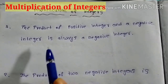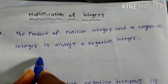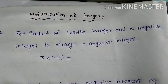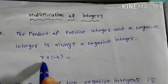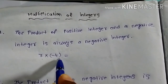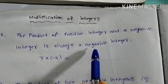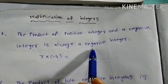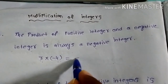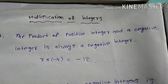What they have mentioned here: the product of a positive integer and a negative integer is always a negative integer. Now you can see the example. See, 3 into minus 4. 3 is a positive integer, minus 4 is a negative integer. Product of positive and negative is always negative. Plus into minus, you will get minus. So 3 times 4 is 12, your answer is minus 12.